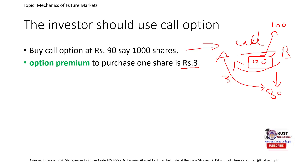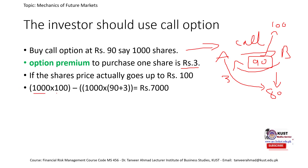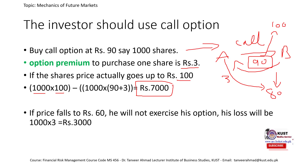If the share price goes up to 100, A buys 1000 shares from B at 90 and immediately sells in the open market at 100. The profit is: (100 − 90 − 3) × 1000 = 7,000 rupees. If the price falls to 60, A will not exercise the option, and the only loss will be the premium: 3 rupees × 1000 shares = 3,000 rupees.